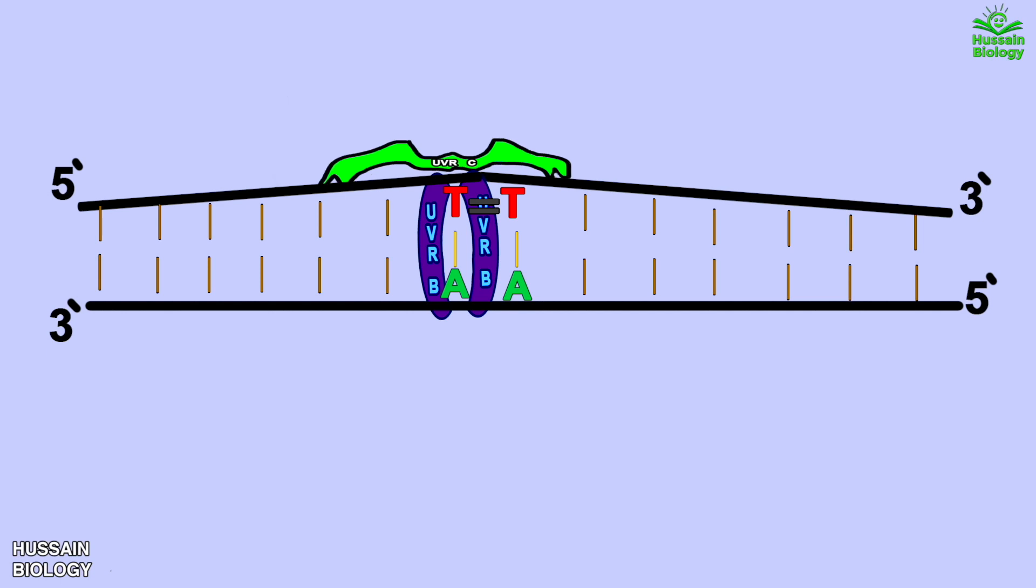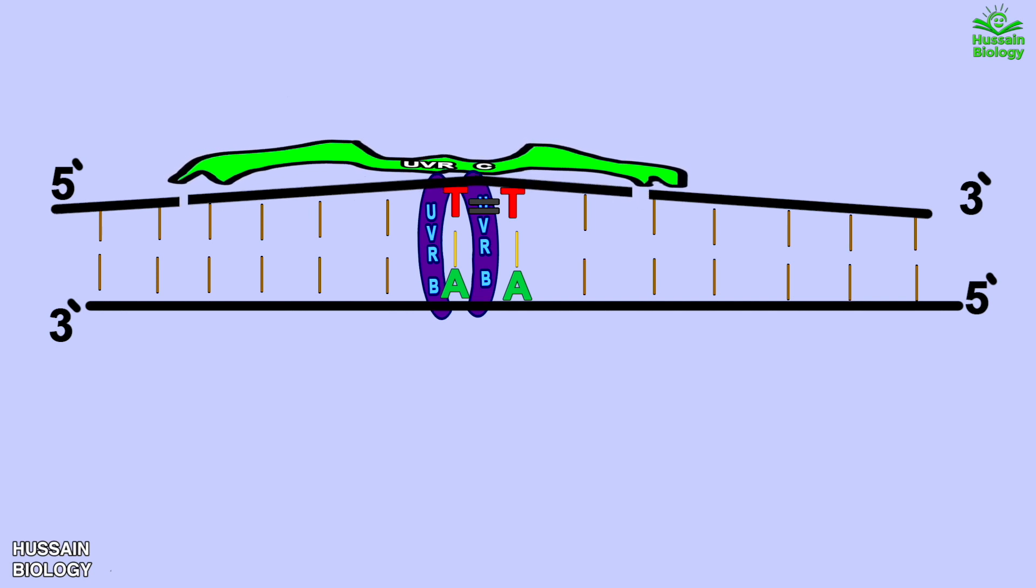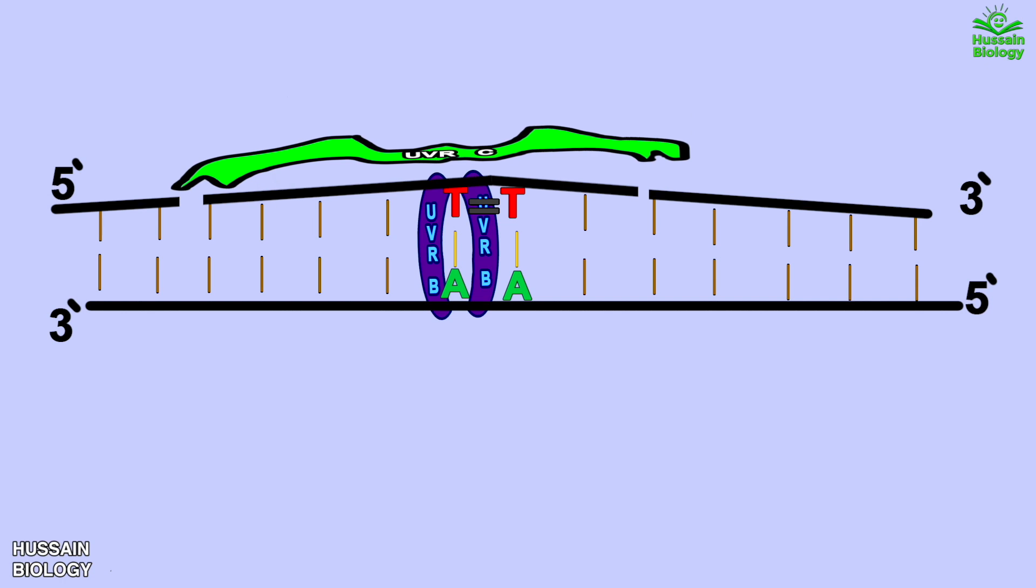Now this UVR C molecule as shown in the diagram cleaves a phosphodiester bond 4 nucleotides downstream of the DNA damage that's towards the 3 prime end, and simultaneously cleaves a phosphodiester bond 8 nucleotides upstream of the DNA damage that's towards the 5 prime end. And creates a 12 nucleotide excised segment as shown in the diagram.